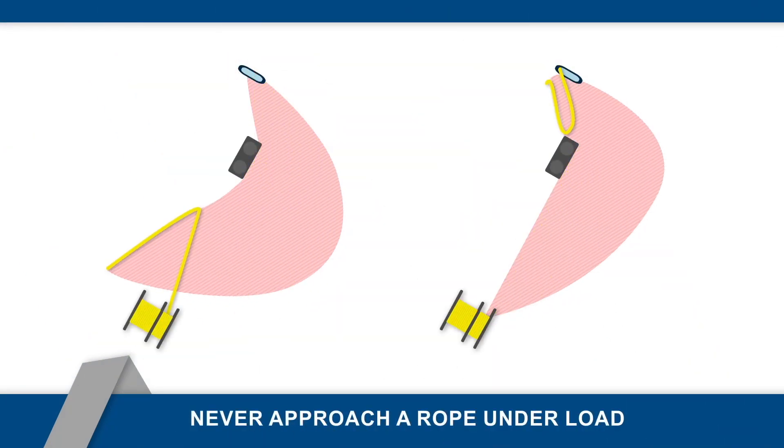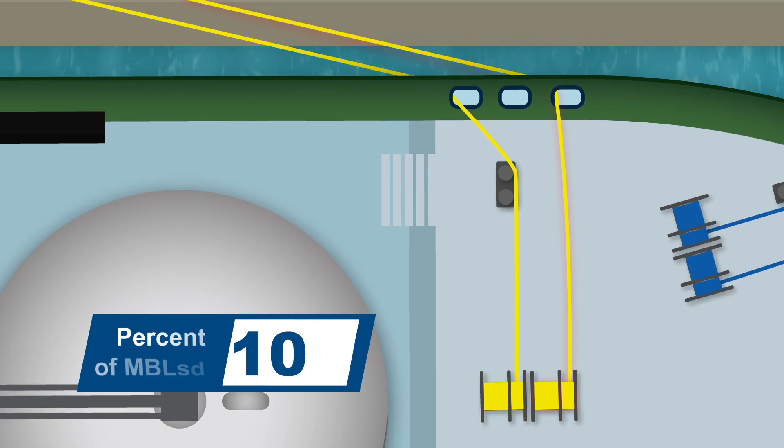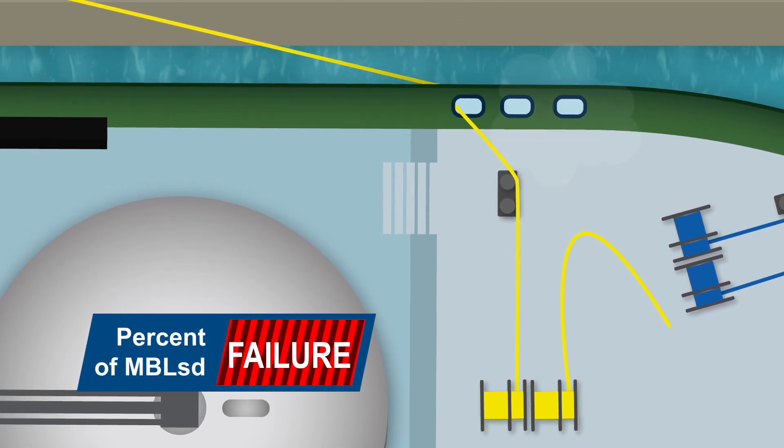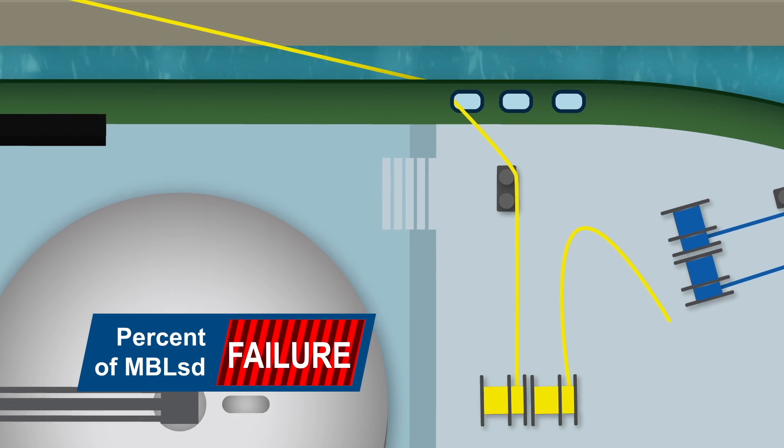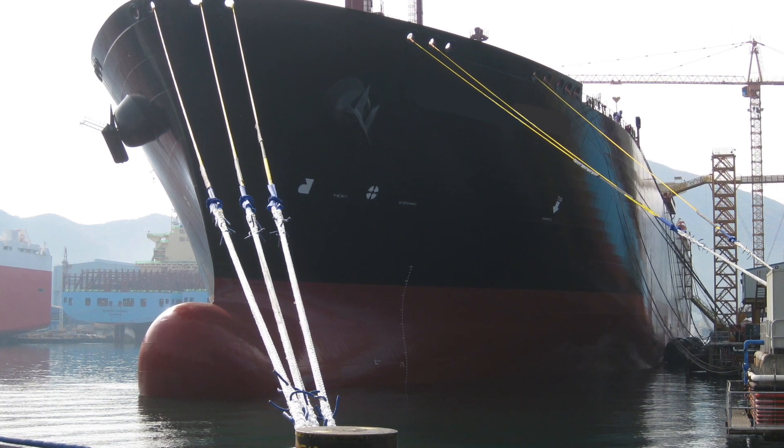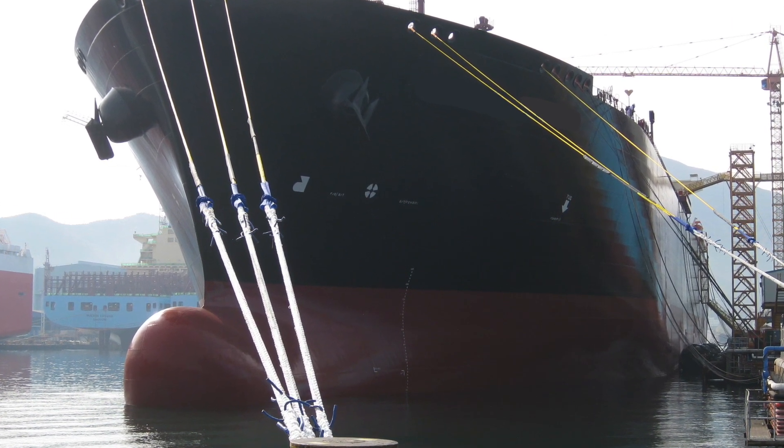While there are tools that allow for a more controlled environment, there are also situations outside of an operator's control that may result in dynamic or shock loading with the possibility of broken lines. In any mooring arrangement, the energy released in the event of a break can be a serious hazard.